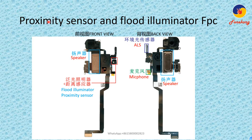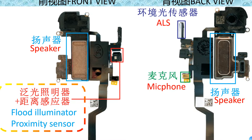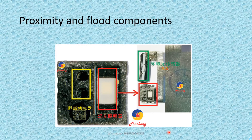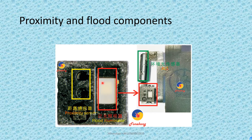First we talk about proximity sensor and flood illuminator — the FPC, the flex cable. This is the flood illuminator and proximity sensor. Let's zoom in. This is the proximity sensor — look here, proximity sensor. And this is the flood illuminator. Proximity sensor and flood illuminator.